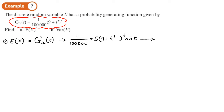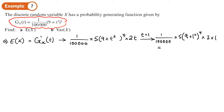Since I need to just substitute t in, I'm going to take my expression and substitute 1 in for t. So: 1 over 100,000 times by 5, in bracket (9 + 1) to the power of 4, and then times by 2 times by 1. And that gives me 1. So E of x equals 1, and this is what we'll use when we're working out Var x.